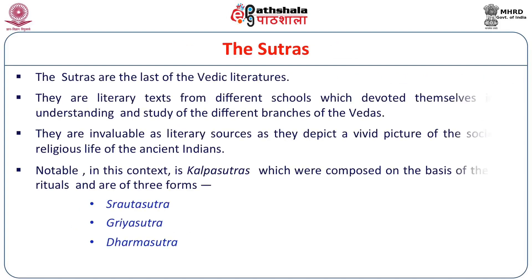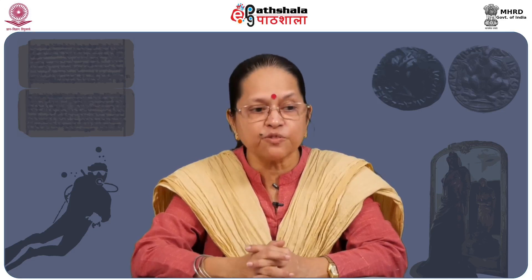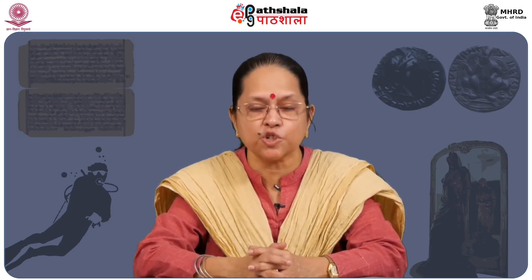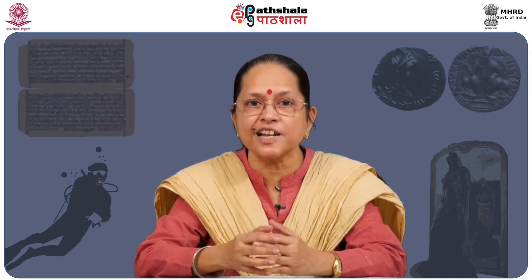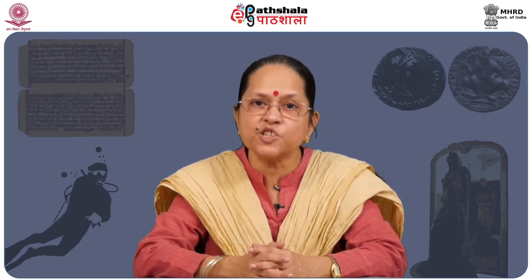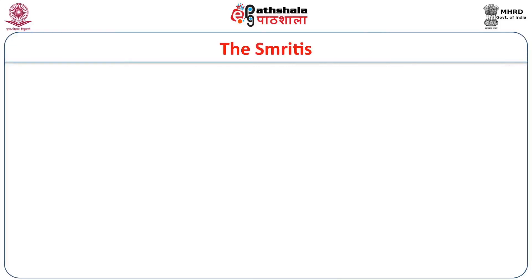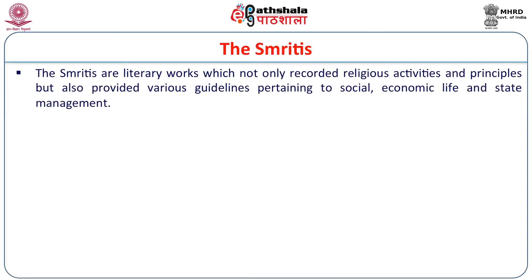The Sutras literally mean thread — they are manuals of instructions for lay people. The Sutras consist of three texts: Shrauta Sutra, Grihya Sutra and Dharma Sutras. Important among these for social history are the Grihya Sutras, which tell us about domestic religious ceremonies that laymen have to follow. Next we have the Smriti texts, which are literary works that not only record religious activities and principles but also provide various guidelines pertaining to social, economic life and state management.